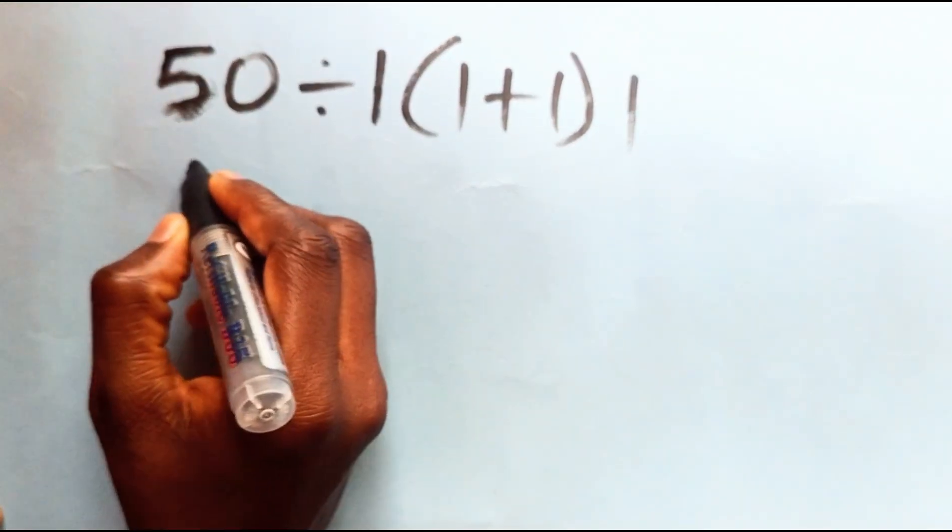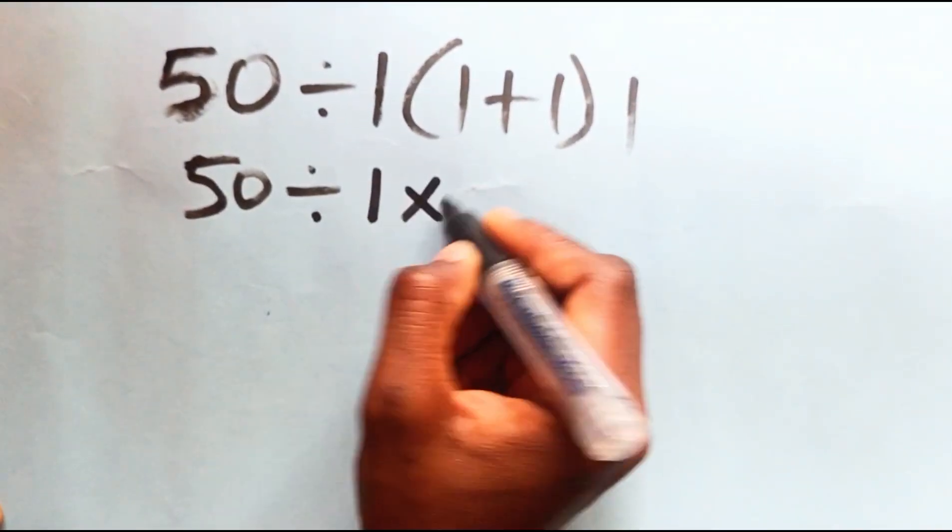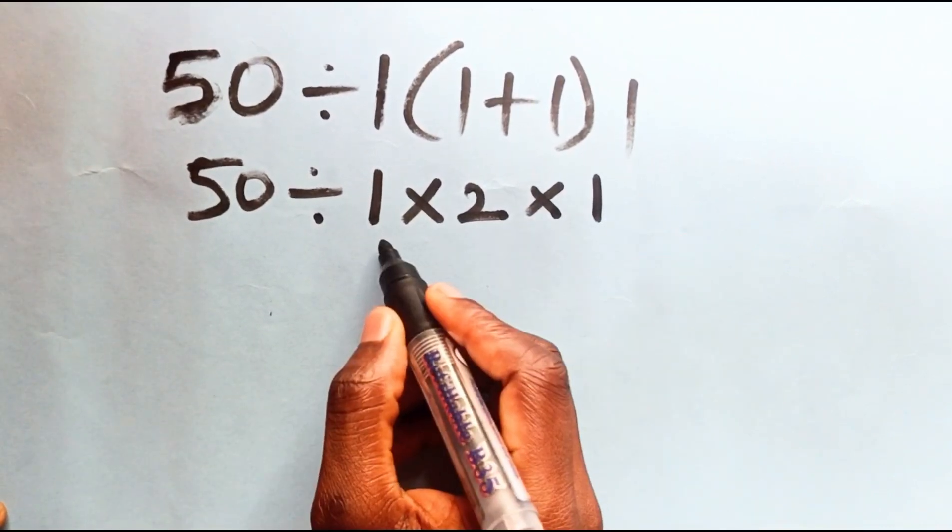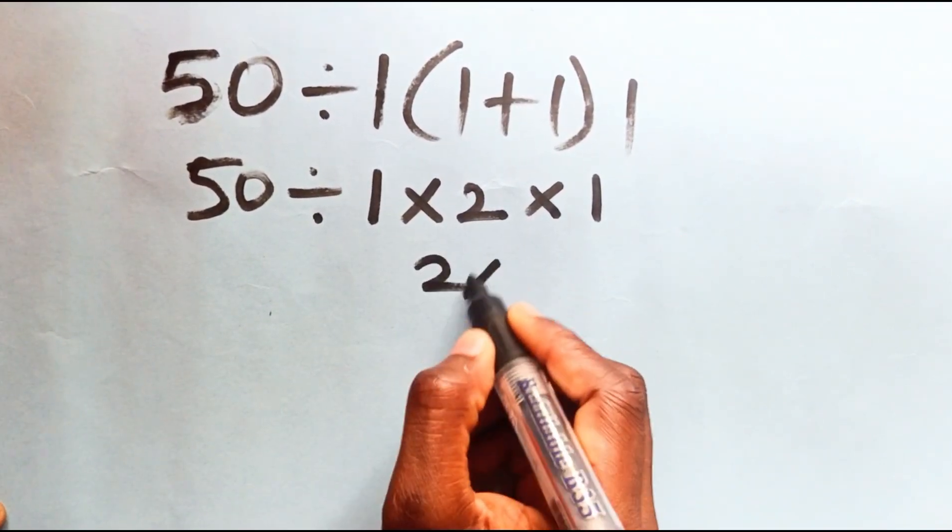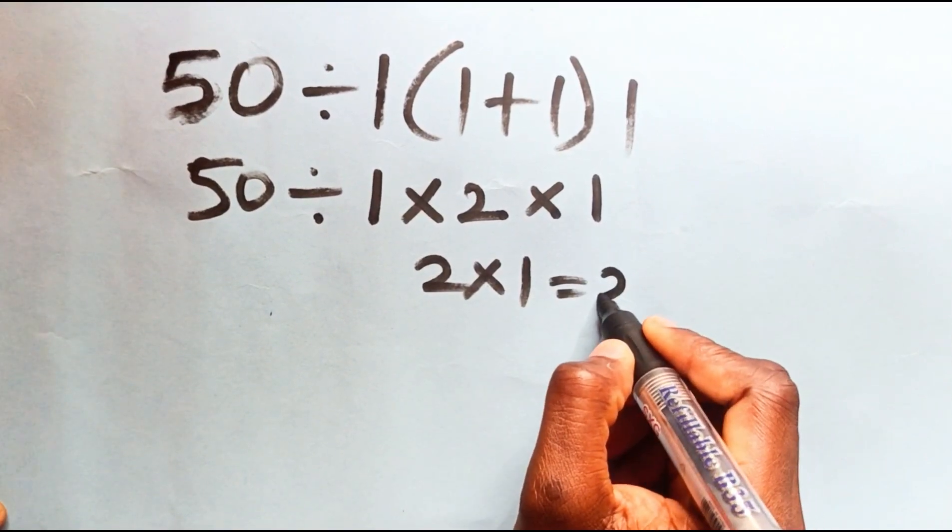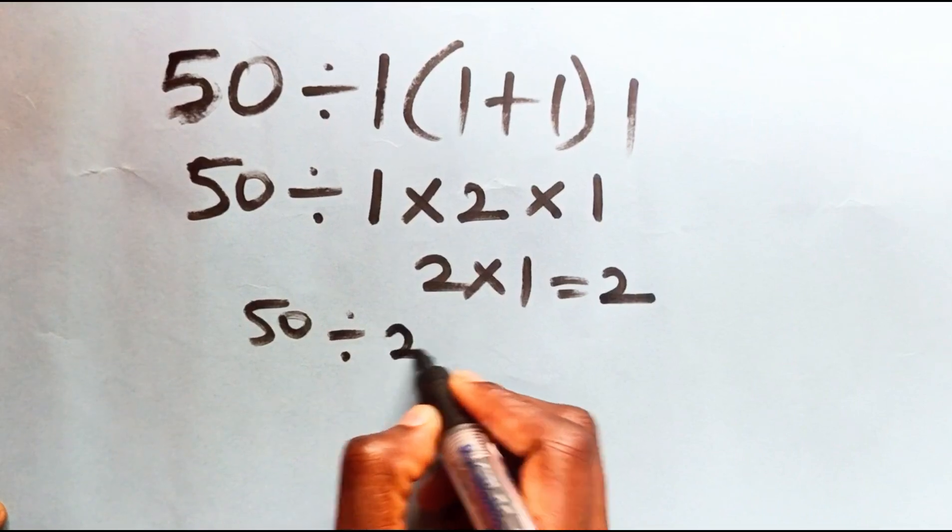You have 50 divided by 1 times 2 times 1. 1 times 2 gives you 2, then times 1 gives you 2. 50 divided by 2 gives you 25.